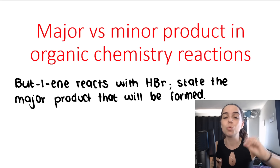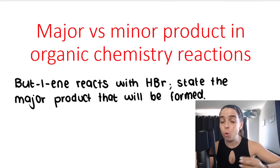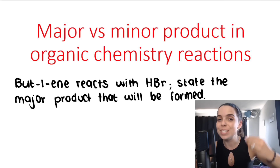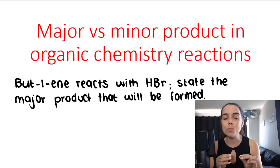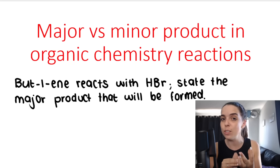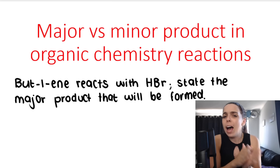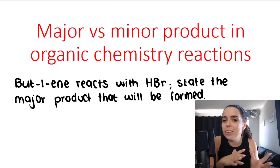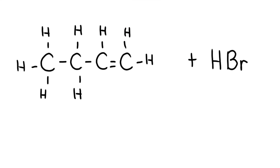The major product is the one that is more likely to form. It is the one that forms the majority of the time. That doesn't mean that the minor product does not form, but the major product is more likely to form because it's the more stable form of the product. How do you know what a major product looks like and what a minor product looks like? Before I explain the rules, I just want you to understand the idea.